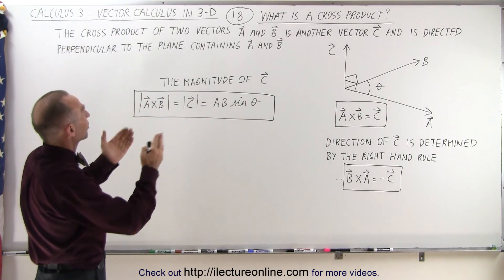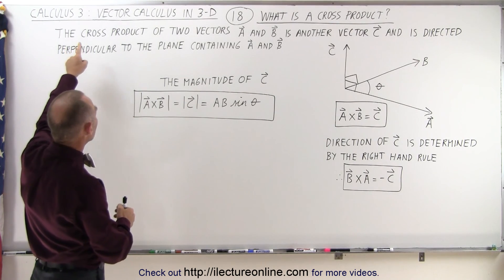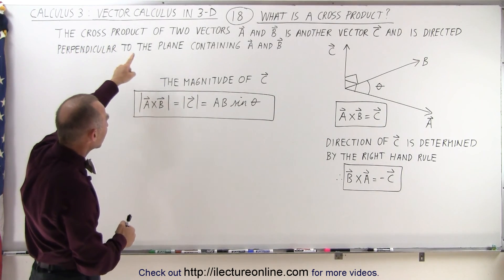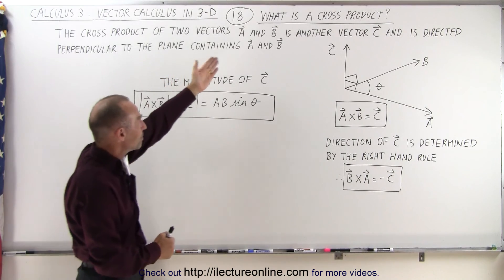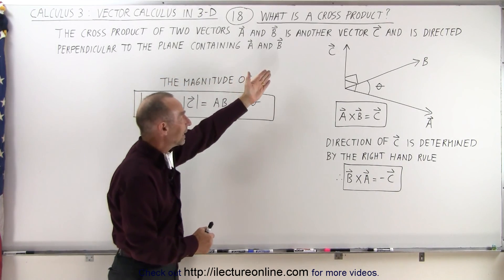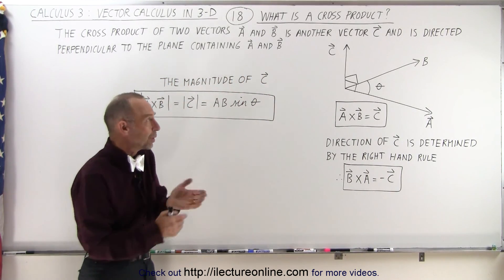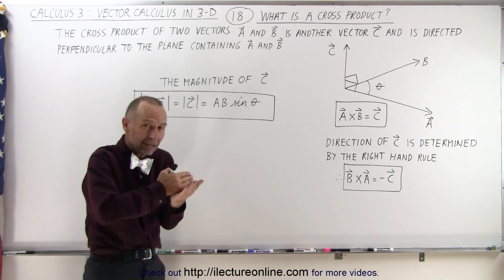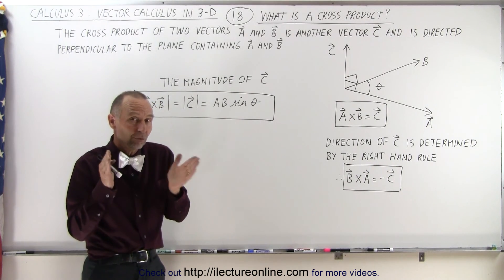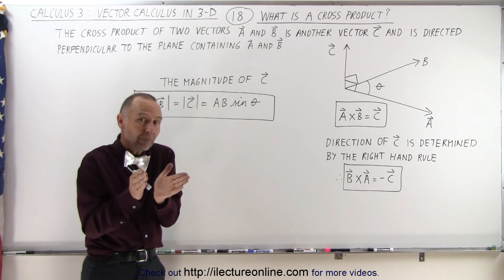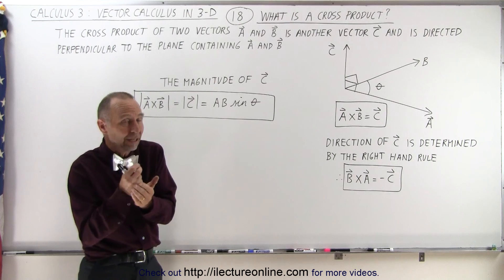The definition of a cross product is the following. The cross product of two vectors, let's call them A and B, is another vector C. That's the difference between a cross product and a dot product — the resultant of a dot product is a scalar quantity, not a vector.